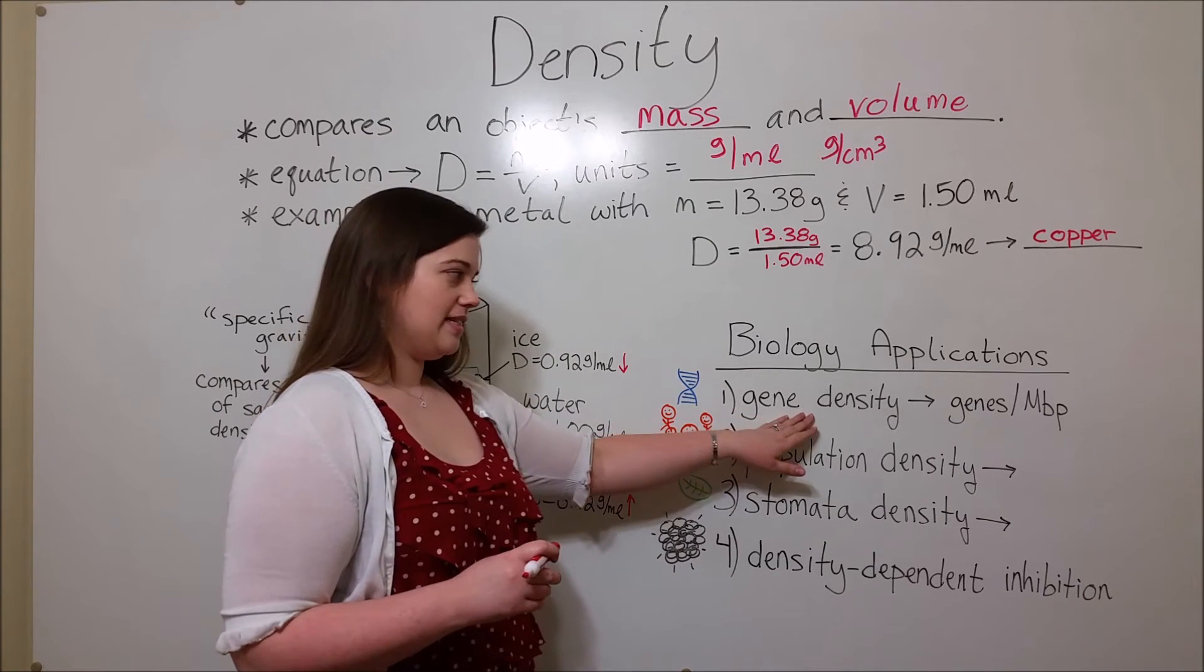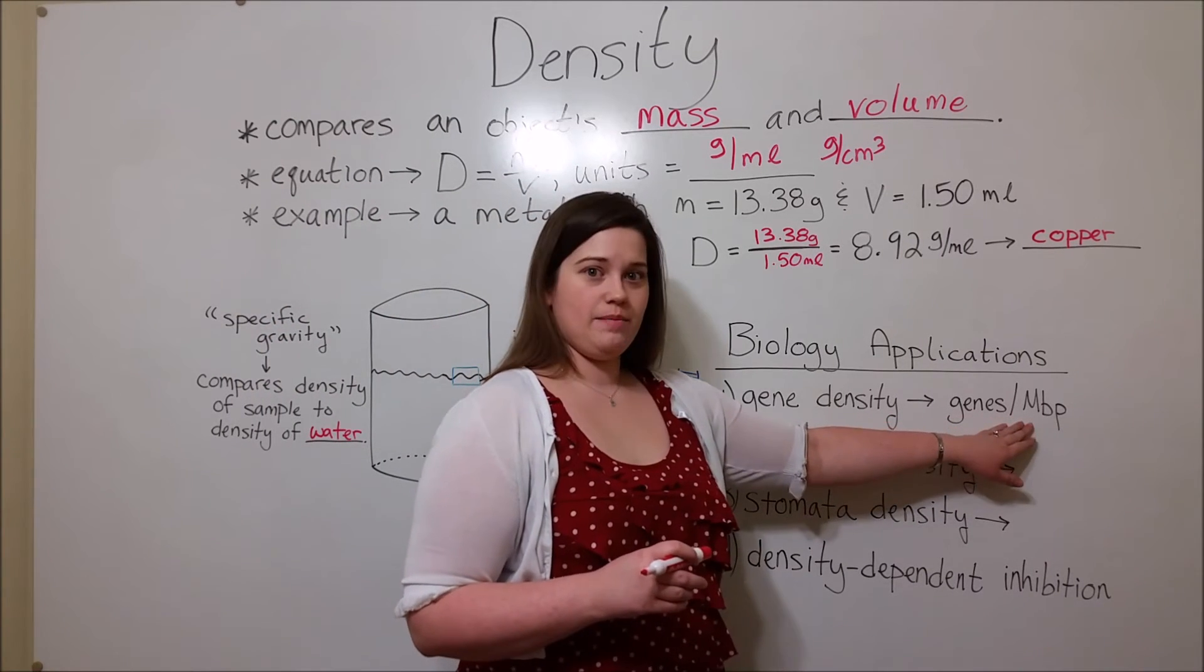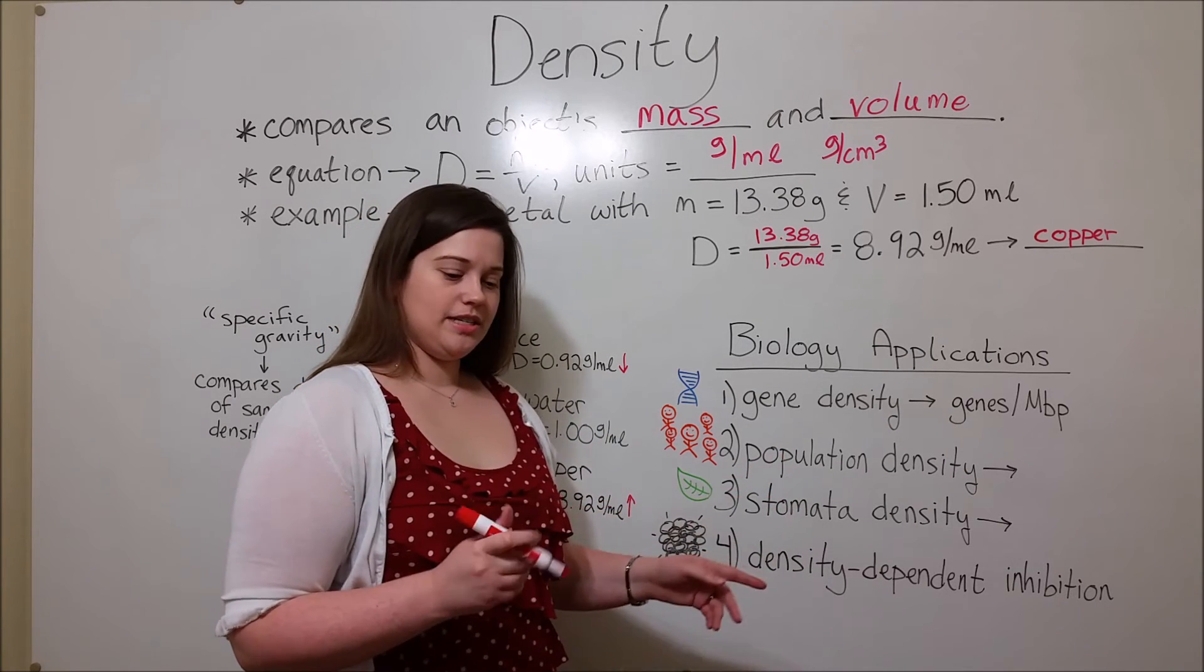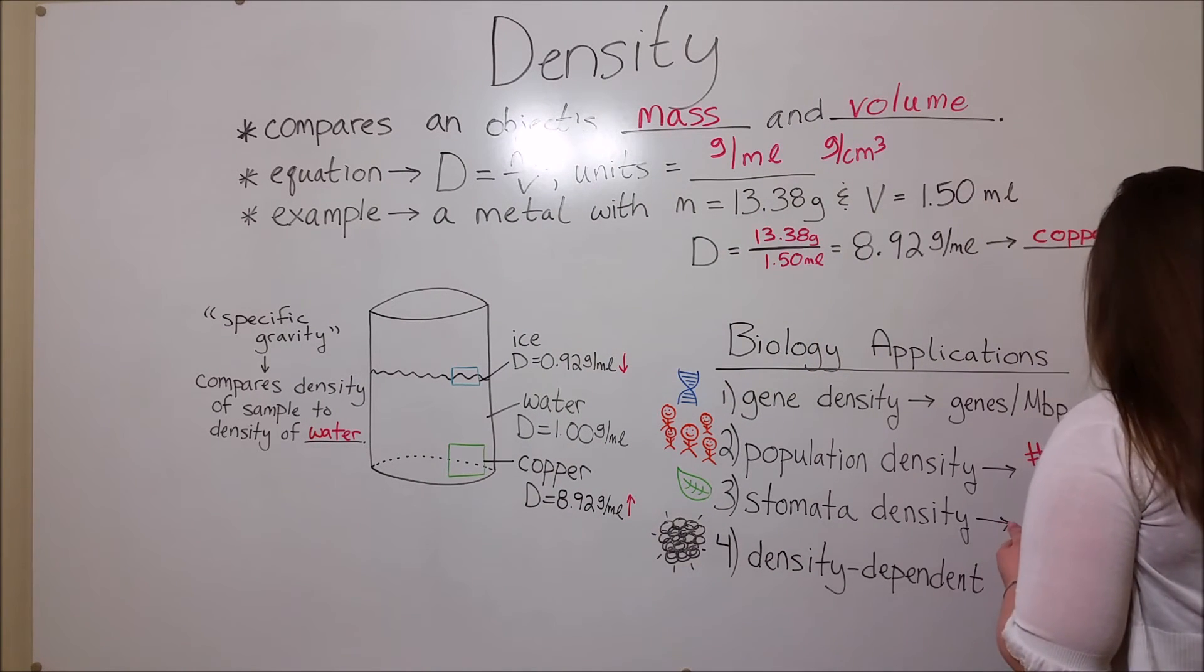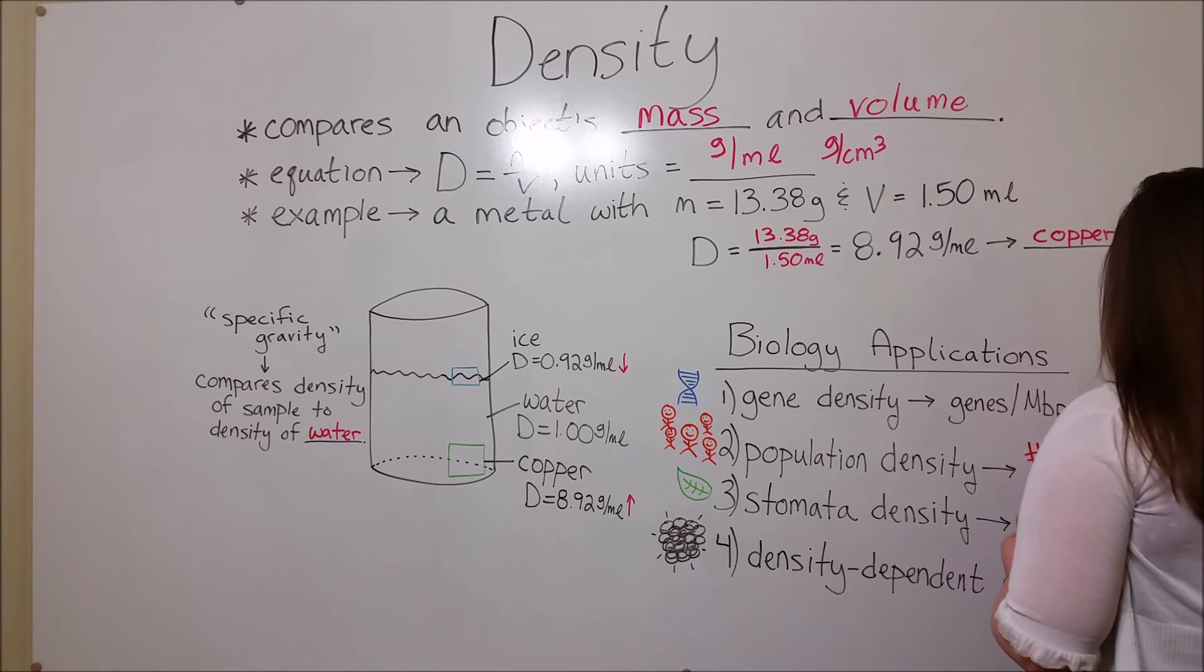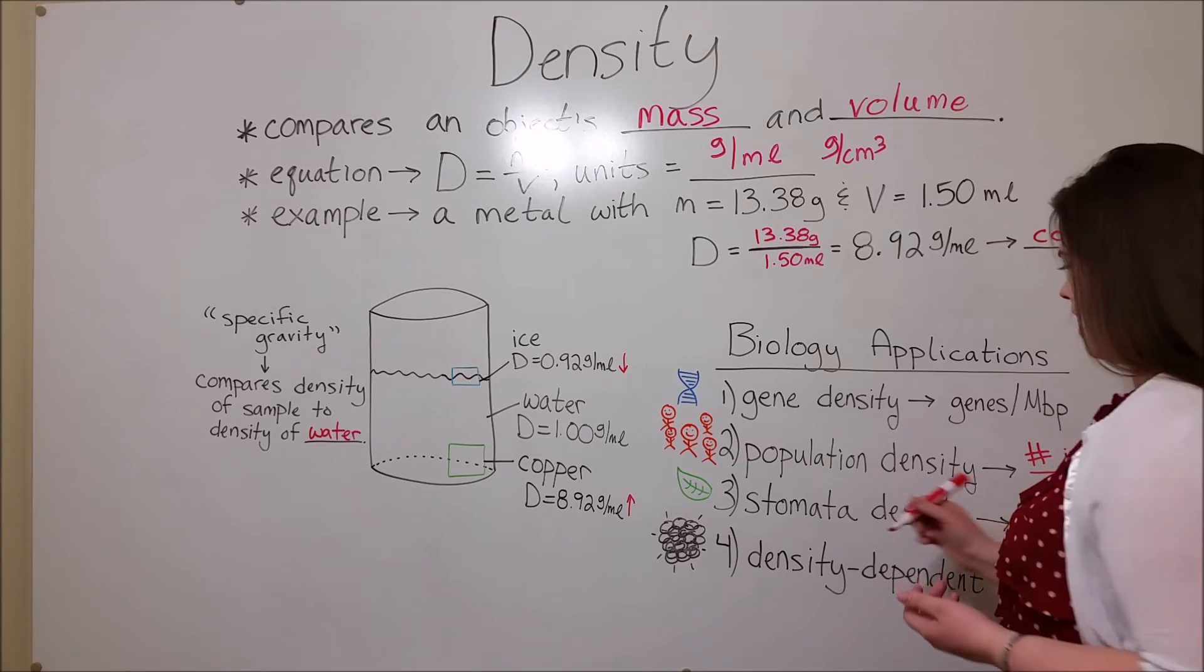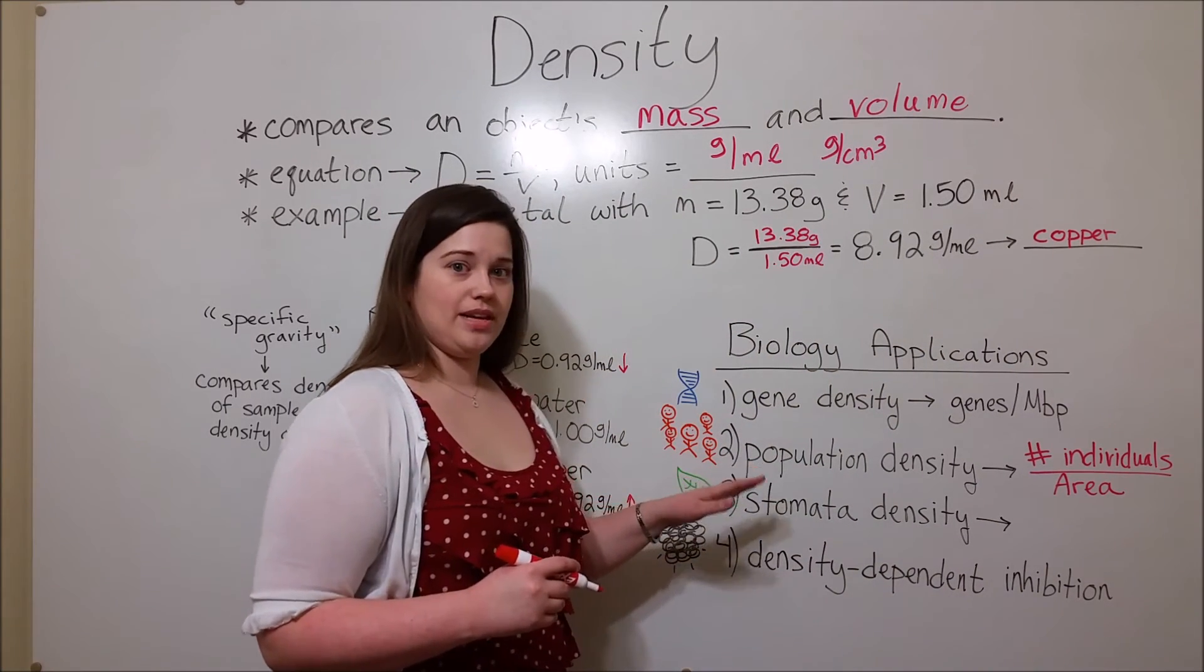For example, gene density is the number of genes per million base pairs in DNA. Population density is another one - the number of individuals per some unit of area. Population density plays a large role when we're talking about population ecology.